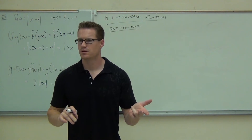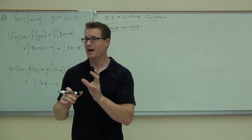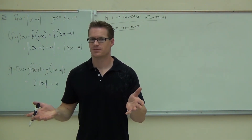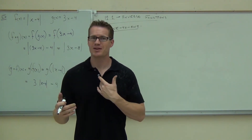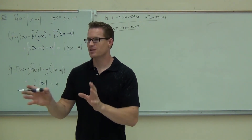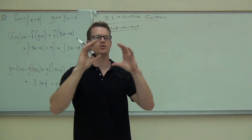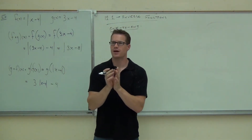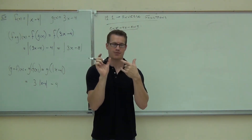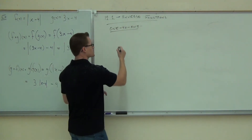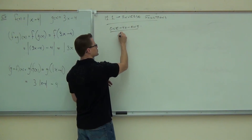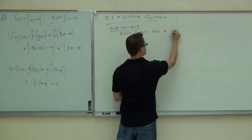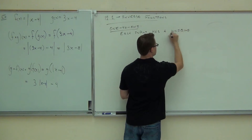What does unique mean? Only one — only one of that happens. You are unique; no one has exactly the same genome as you, no one has the same exact set of traits. 1-to-1 means every input has a unique output that never happens again. A function is 1-to-1 if each input has a unique output.